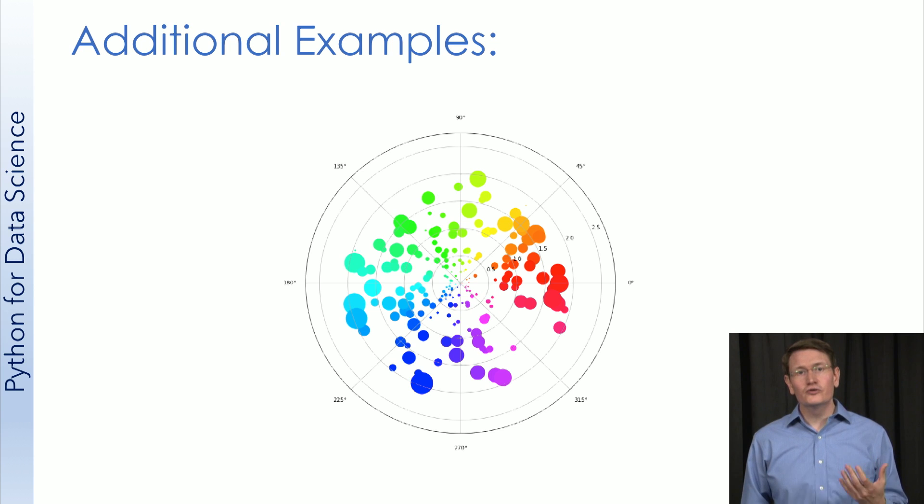In this example, we also use color code to provide a fourth dimension. So in this image, we have angle, distance from the center, size of the bubble, and color all coded here.